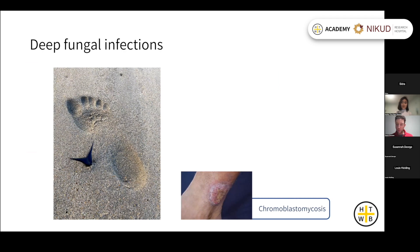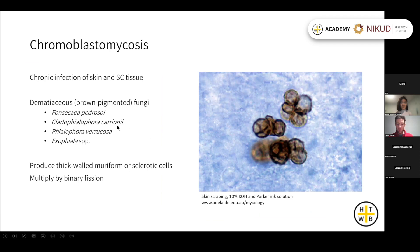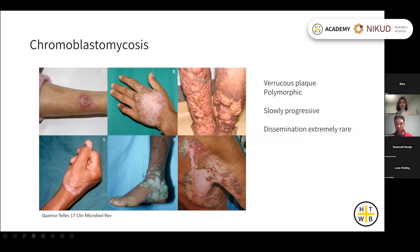Chromoblastomycosis is caused by various species of pigmented fungi — usually Fonsecaea and Cladophialophora are most common. Diagnosis is made on microscopy or biopsy when you observe muriform cells, or sclerotic bodies: thick-walled, pigmented structures seen in the host tissue. Presentation is typically a verrucous or thickened plaque, ranging from quite localized disease to more extensive verrucous presentations. It is a very slowly progressive condition over years, localizing to the skin and subcutaneous tissue; dissemination is incredibly rare.